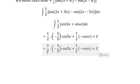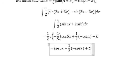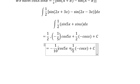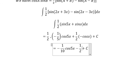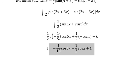1 over 2 multiply with negative 1 over 5 you will get negative 1 over 10. This one you get negative 1 over 2 cosine x and this is the final answer.